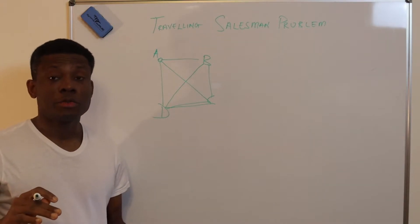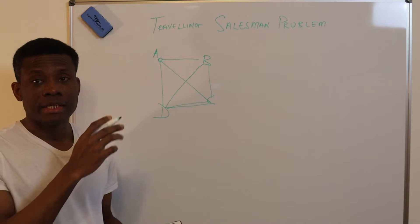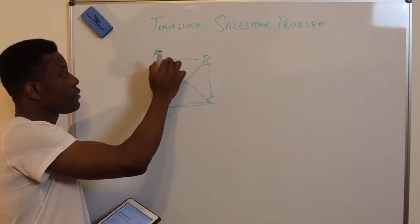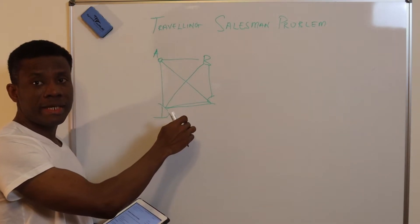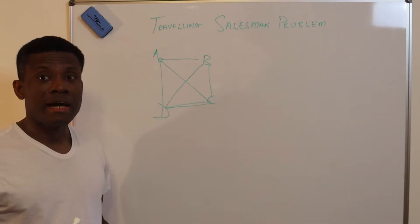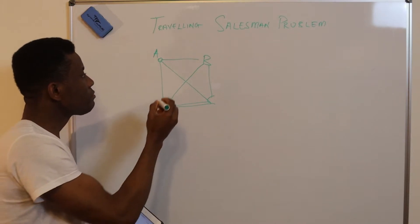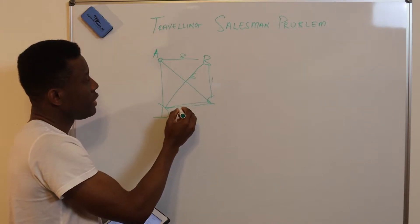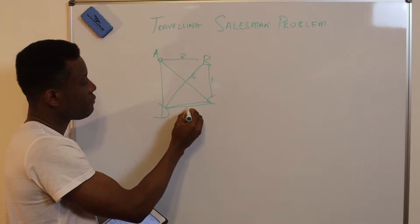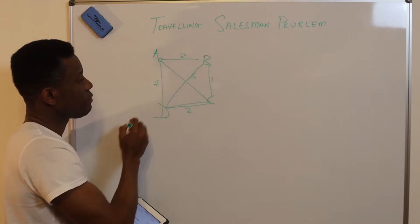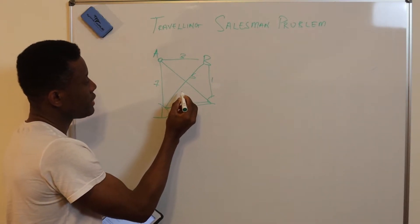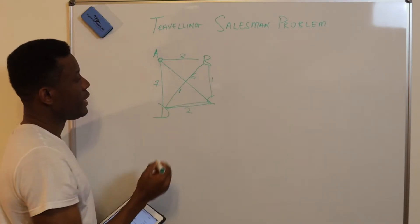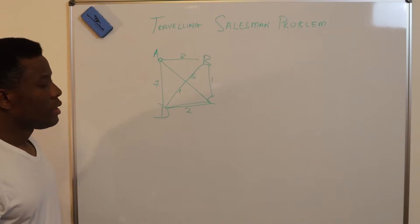The Traveling Salesman Problem is represented as a graph with nodes and edges, where each edge has a weight. For instance, we can have weights of three, four, one, five, two, seven, and one on the various edges connecting the nodes.